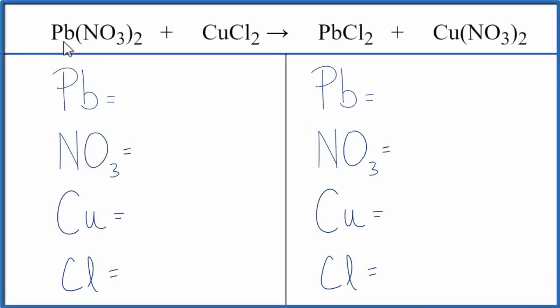In this video, we'll balance the equation Pb(NO₃)₂ plus CuCl₂. That's lead 2 nitrate plus copper 2 chloride.